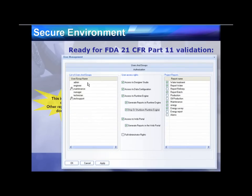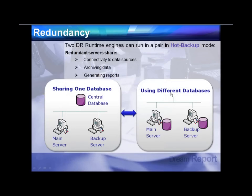Security controls extend down to which individual reports each user or group can access. DreamReport can also run in a redundant pair or hot backup mode, giving higher availability — two nodes may both log data into a central database, or each maintain its own logging database kept in sync on a fixed interval, transparent to the user.